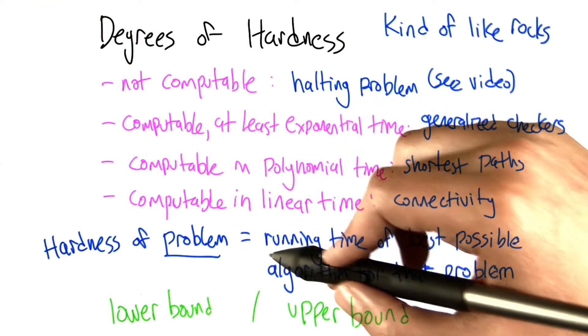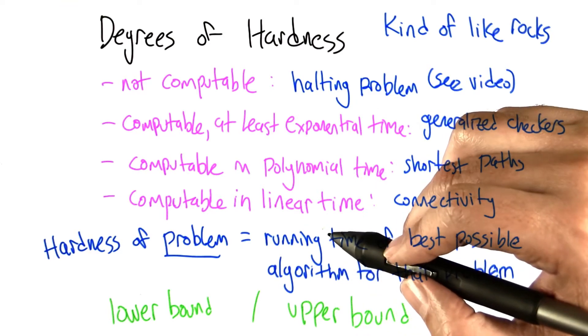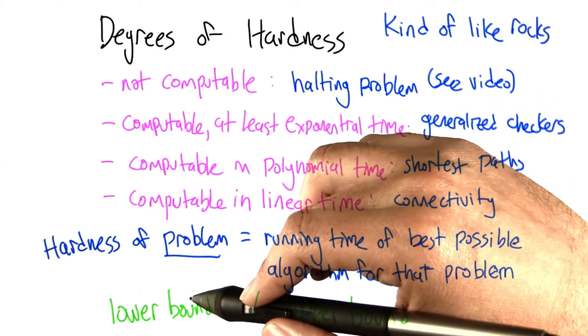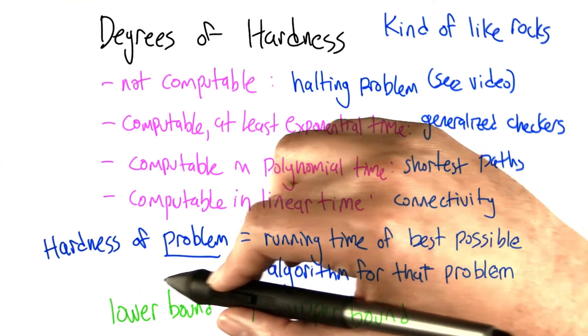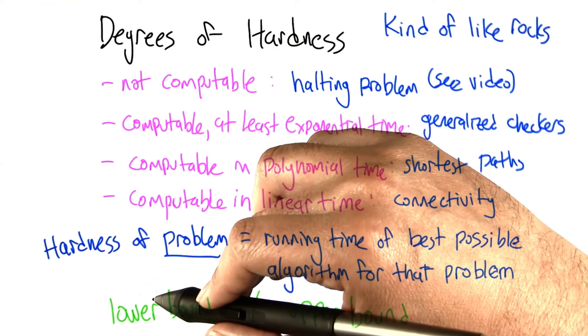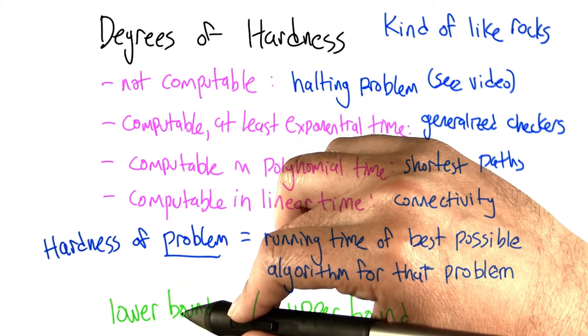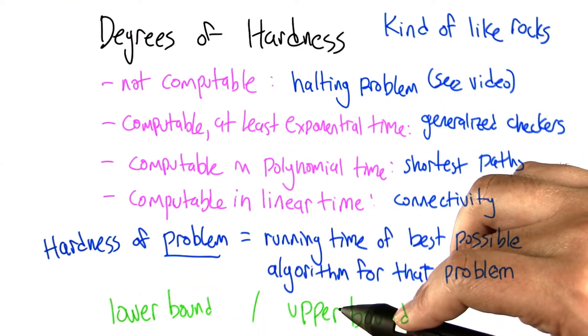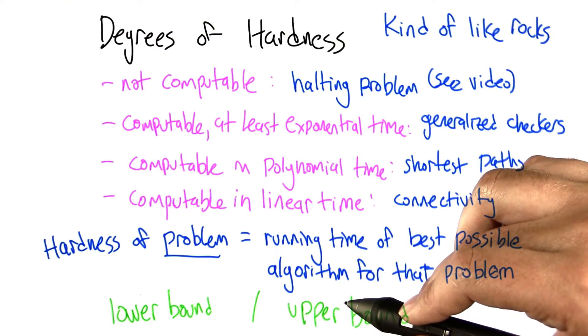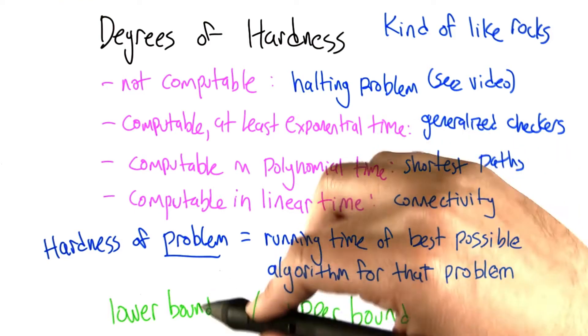For some problems, we're not exactly sure how hard they are, but we have lower bounds and upper bounds. So, for example, we might know that a certain problem requires at least n squared time to solve, but we know that it requires no more than n to the fifth. So the true complexity, the true hardness of this problem is somewhere between those two bounds.